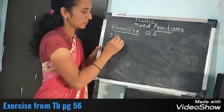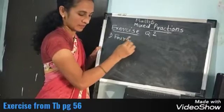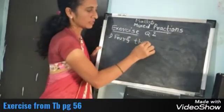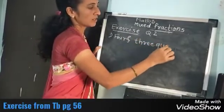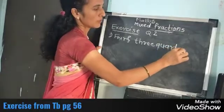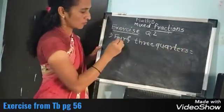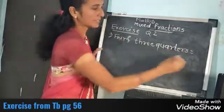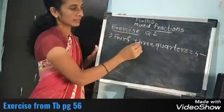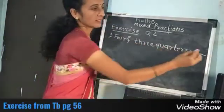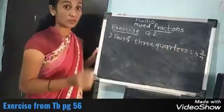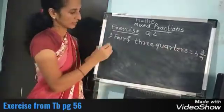First one: 4 and 3 quarters. 3 quarters means what? 3 upon 4. So write down 4, and 3 quarters means 3 upon 4. You have to learn it.